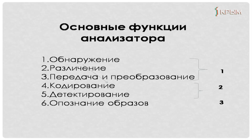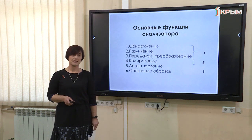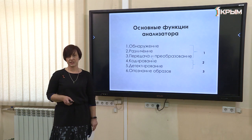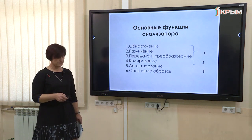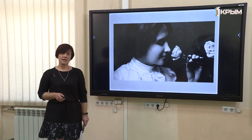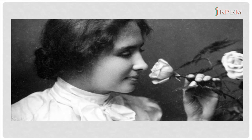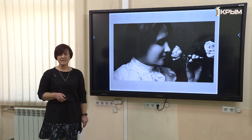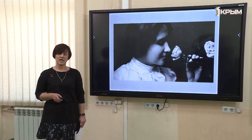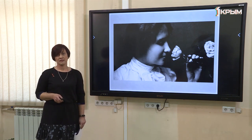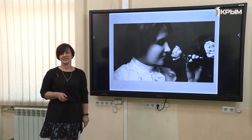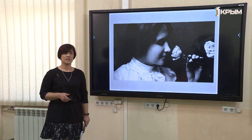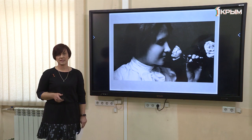Случалось ли в жизни, когда анализатор прекращал свою работу и это влияло на жизнь человека? Конечно. Я выбрала для вас случай Хелены Келлер — американки, которая в детстве из-за тяжёлой болезни потеряла зрение и слух. Чтобы её обучить, ей прописывали на ладони пальцами буквы — таким образом она выучила алфавит. Прикасаясь к губам собеседника и к гортани, она могла выяснить, о чём говорит человек, научилась произносить звуки, стала автором нескольких книг. По её книгам были сняты детские фильмы. Даже нарушение отдельных органов не мешает человеку жить полноценно.